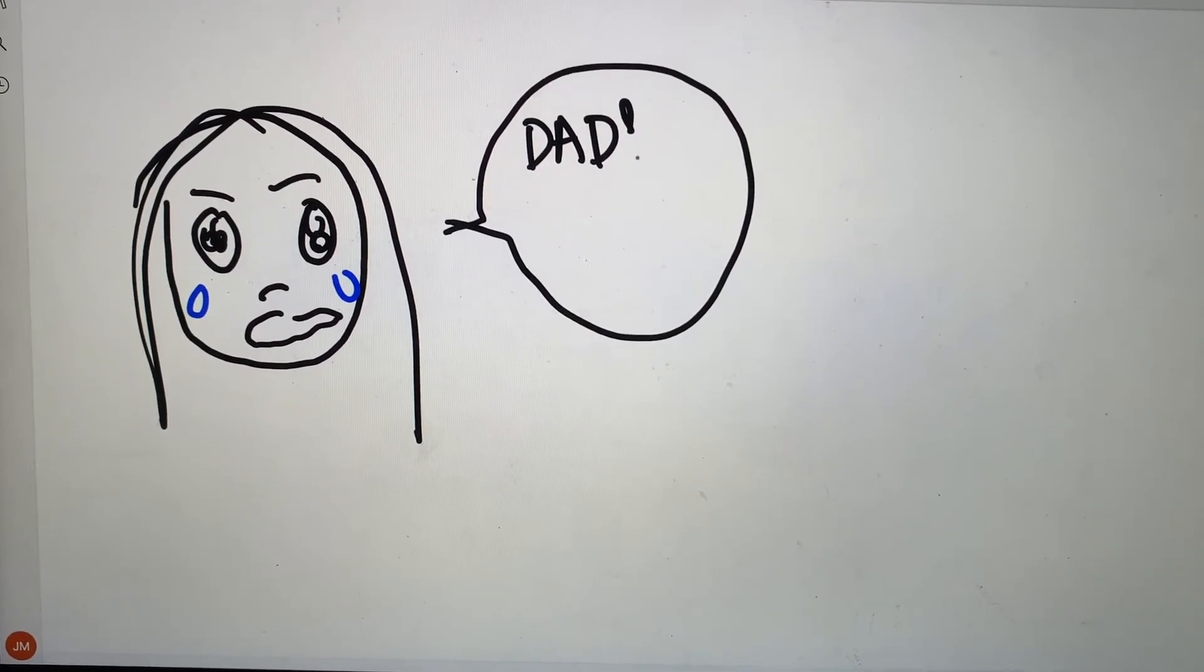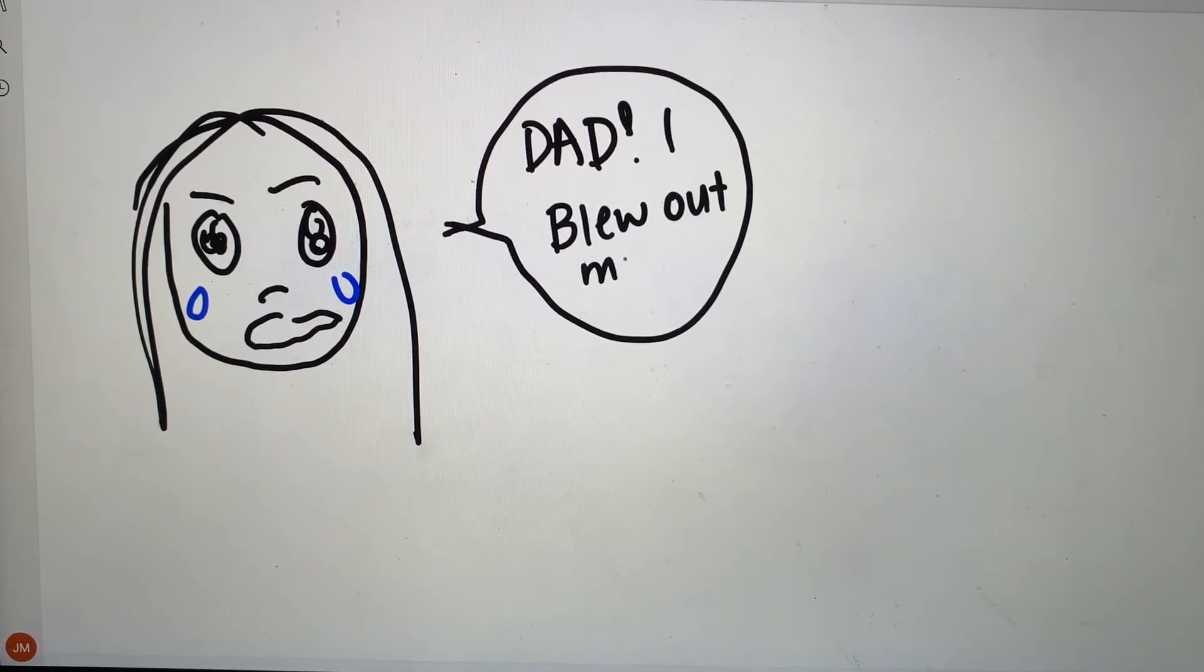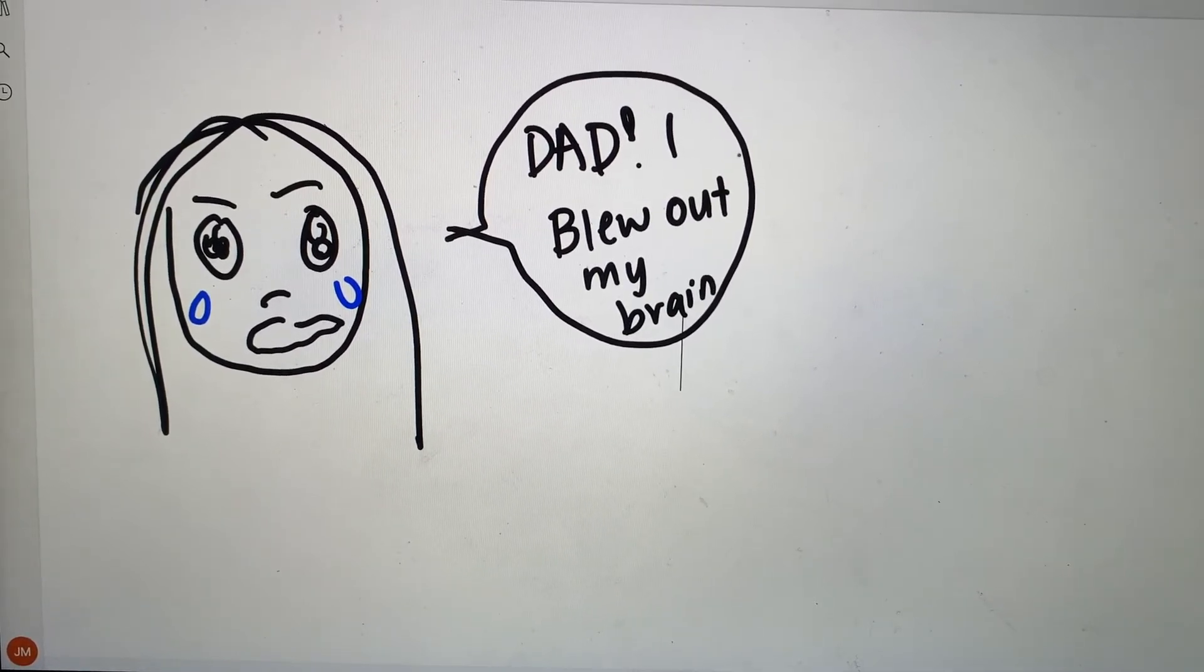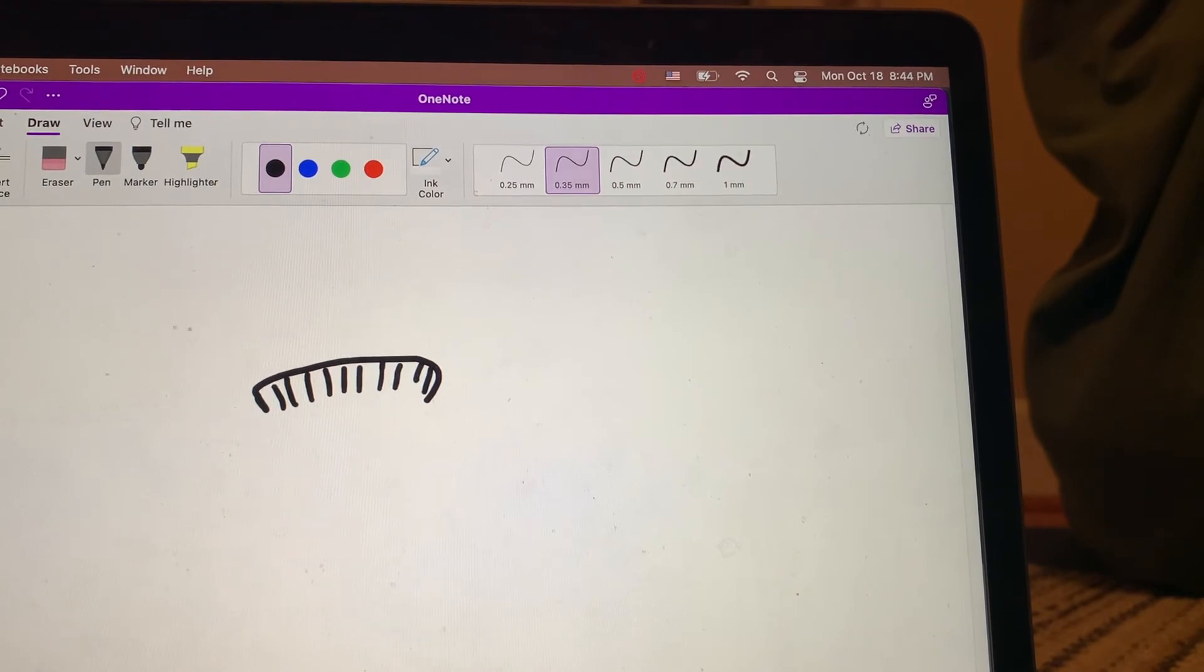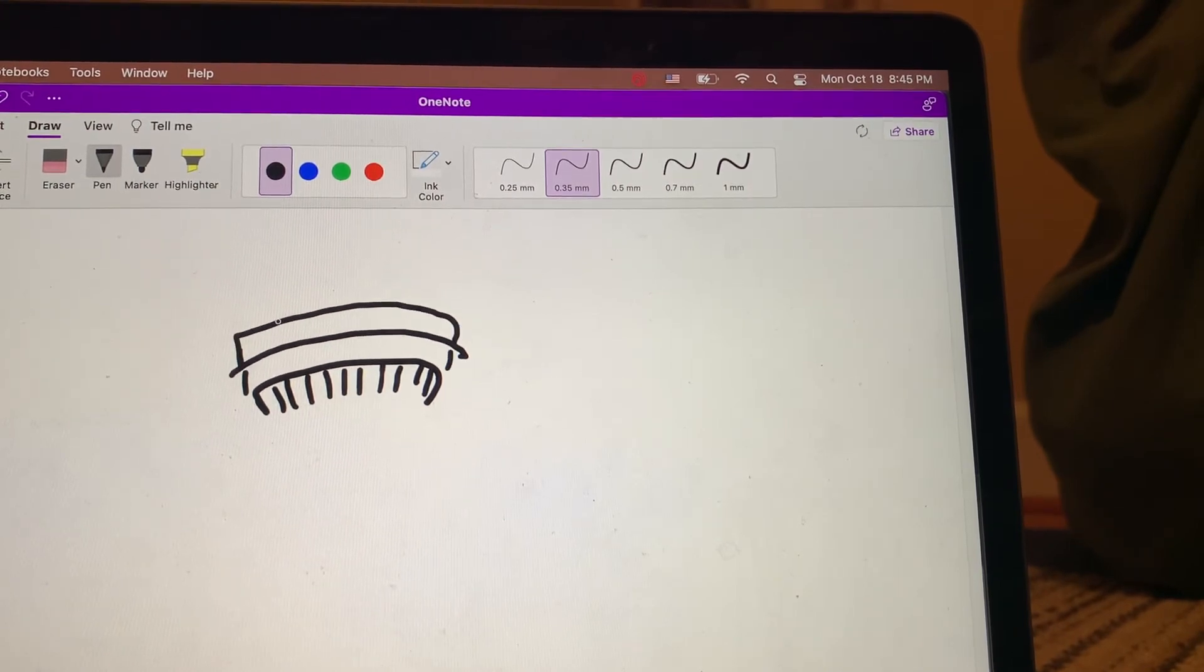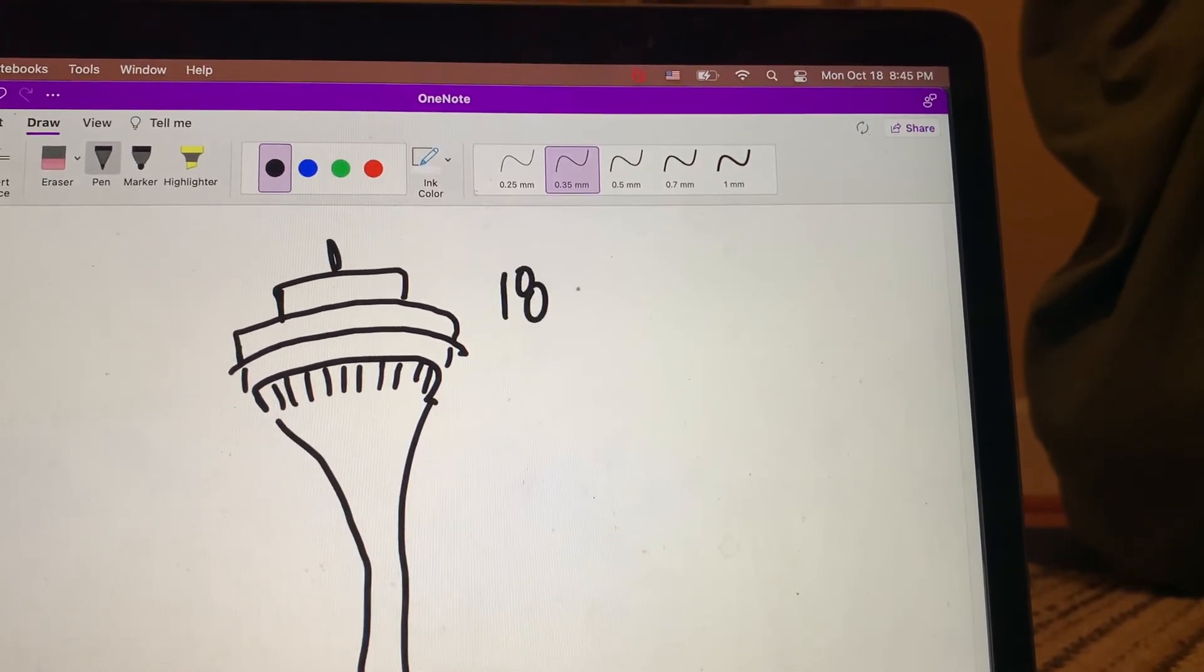And then my dad was like, Julia, you can't blow out your brain. And then I realized I was just being stupid. And I want to say I was really young when that happened, but it was really when I was 18 and entering college.